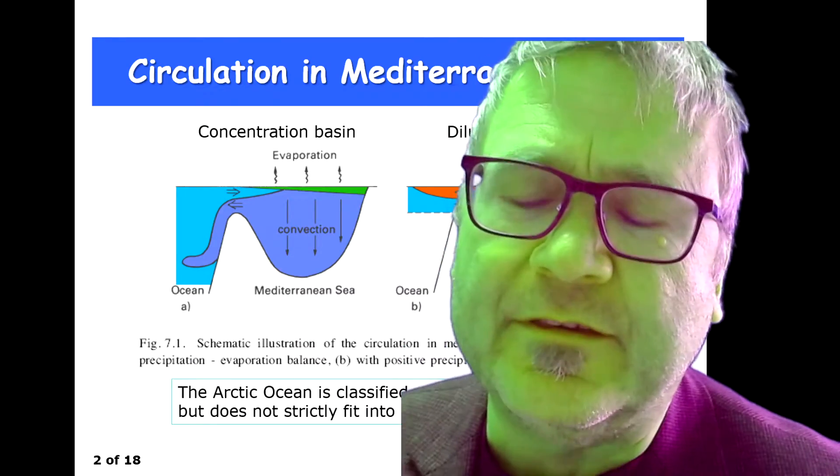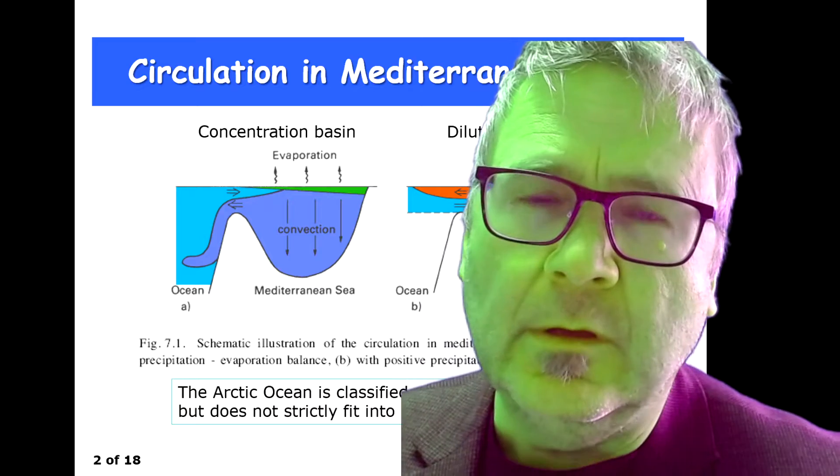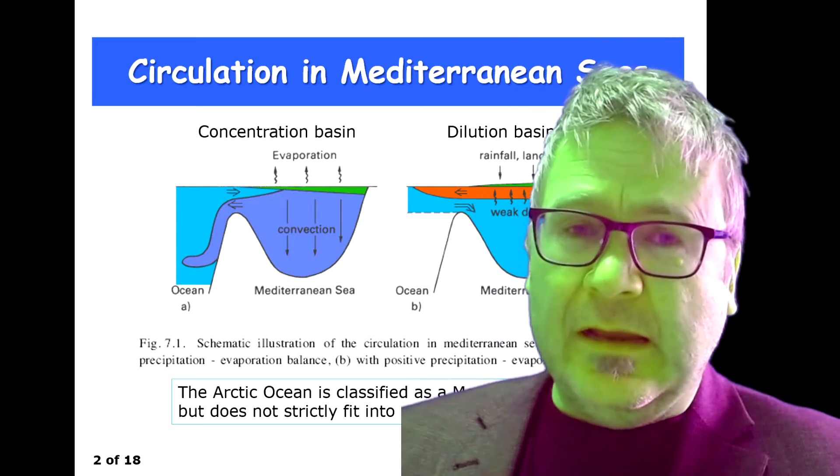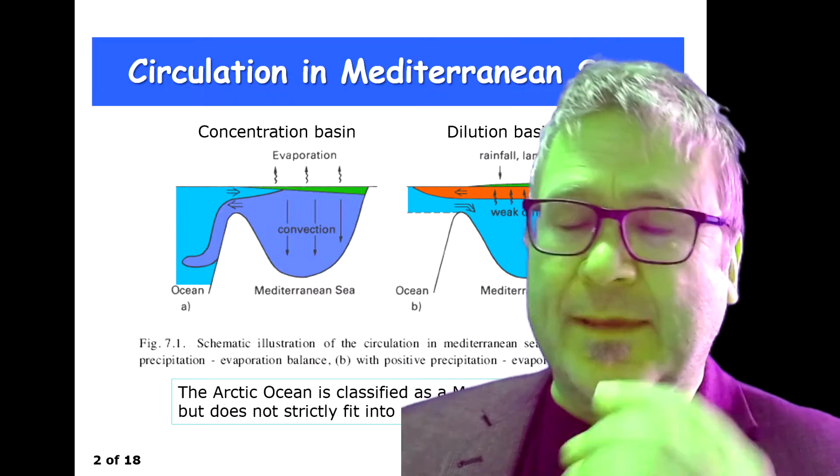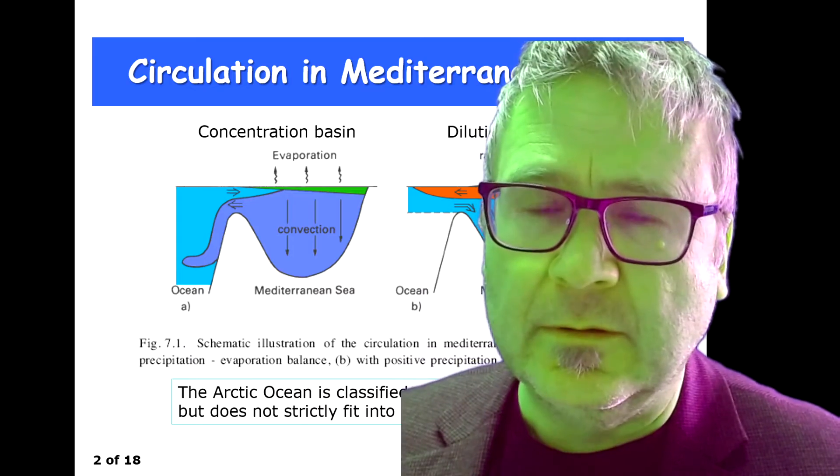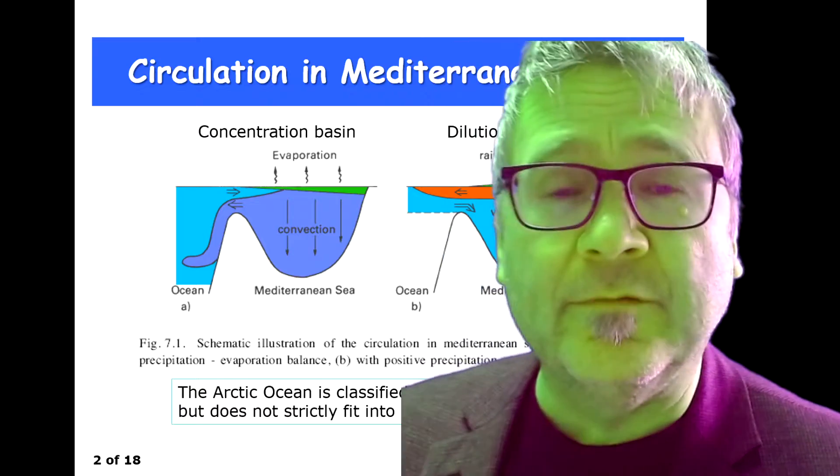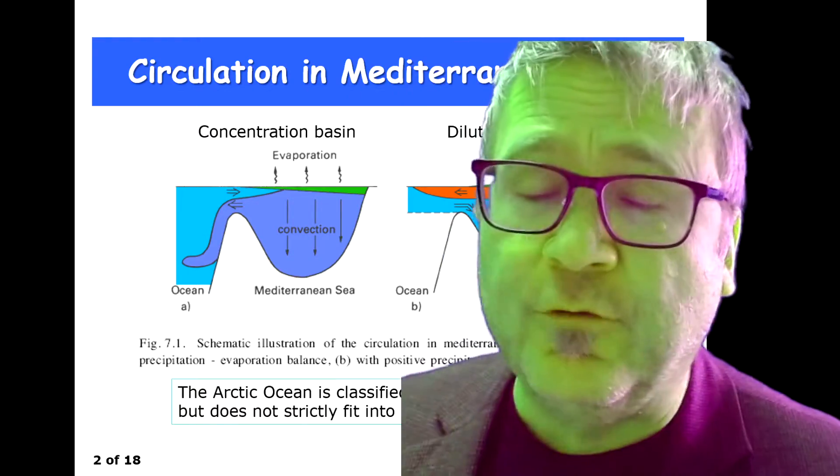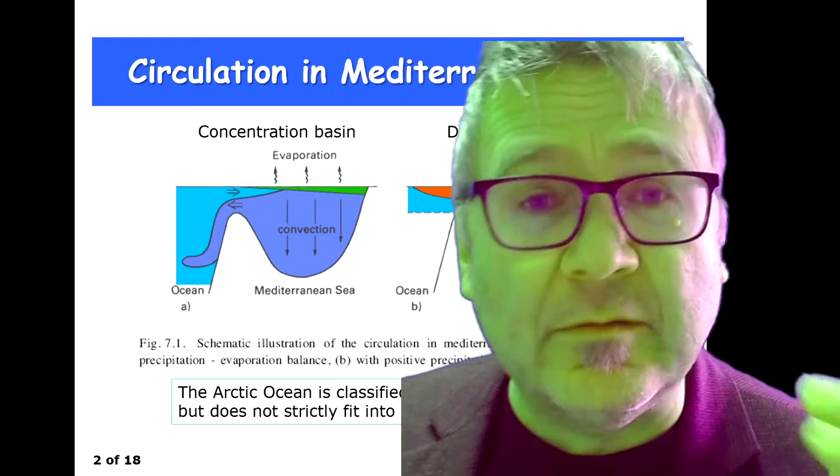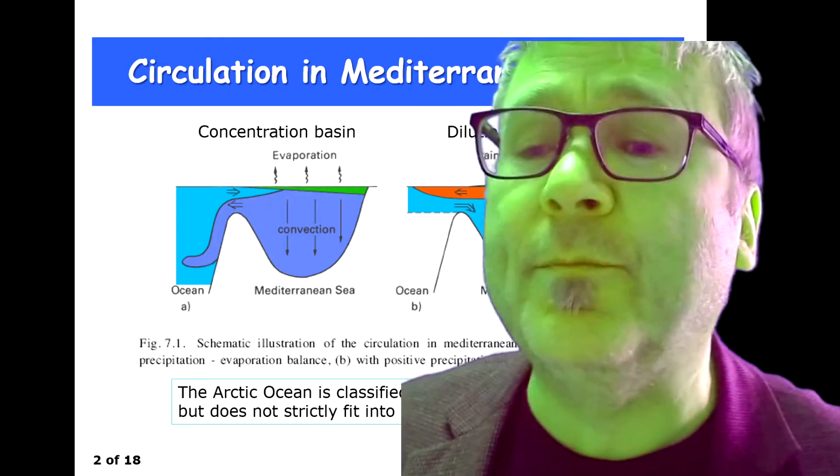What are these Mediterranean seas? They are semi-enclosed basins, fairly deep with water depth that can be up to 4,000 meters, like water depth that you find in the open ocean.